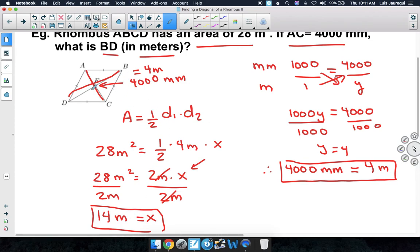But remember, that other diagonal had a name, so that name was BD, so we can conclude by saying that, therefore, BD is equal to 14 meters. And that's how we can find a diagonal of a rhombus. Thank you for watching, and have a wonderful day.